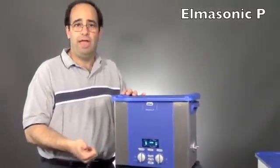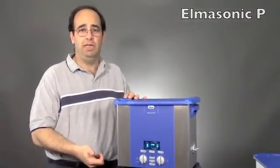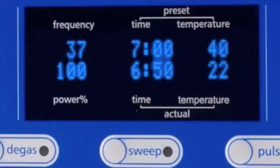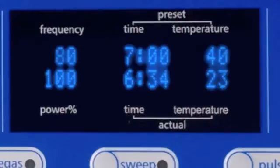The P line also has multi-frequency capability, so you can run at 37 kilohertz, which is your typical regular cleaning mode, but it also runs at 80 kilohertz, producing smaller bubbles, and the operation is virtually silent.